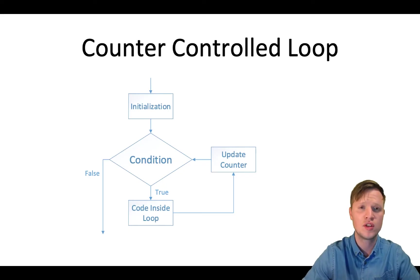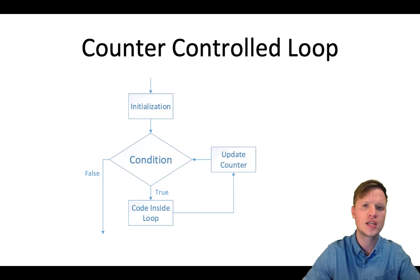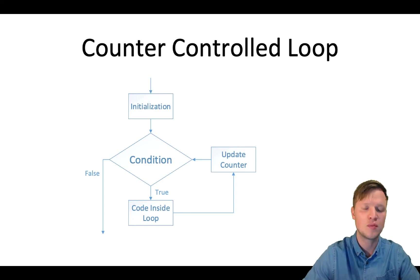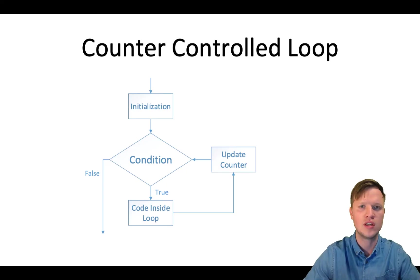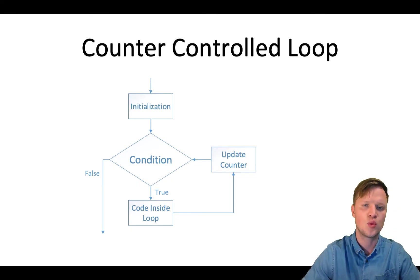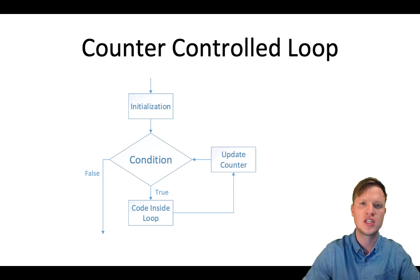This initialization is very important — it tells the counter controlled repetition structure from where to count. It's like saying to a person: 'Count for me from one to ten.' We don't see the logic, but the logic is still there. We tell that person the boundaries — from where he needs to start and when he needs to end. In the same way we need to tell the counter controlled repetition structure from where to start and where to end.